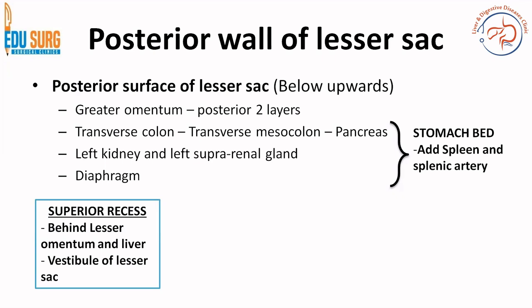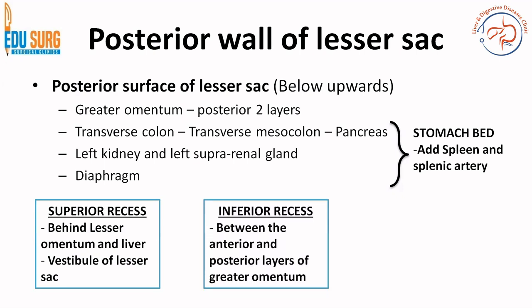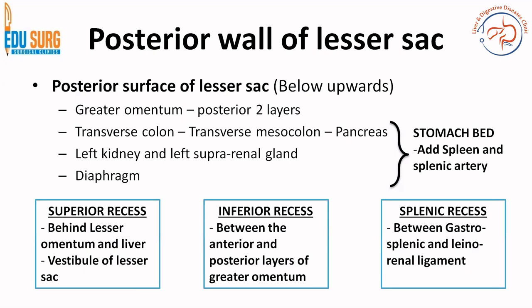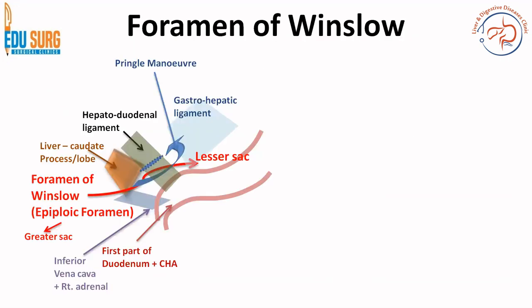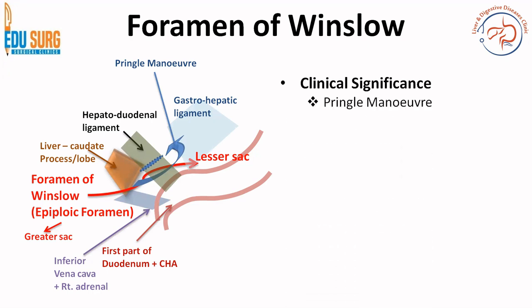Going into the recesses: the superior recess is behind the lesser omentum and liver, also known as the vestibule of the lesser sac. The inferior recess is between the anterior and posterior layers of the greater omentum, and the splenic recess is between the gastrosplenic and the splenorenal ligament. Just imagine the fish: the superior recess is the superior fin, the inferior recess is the lower part, and the splenic recess is the tail of the fish. The foramen of Winslow is the mouth of the fish.